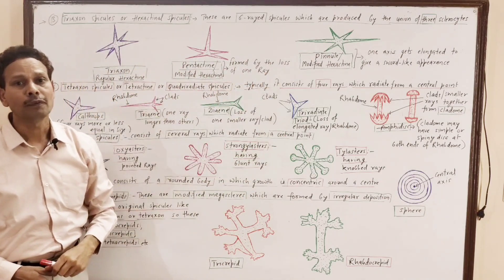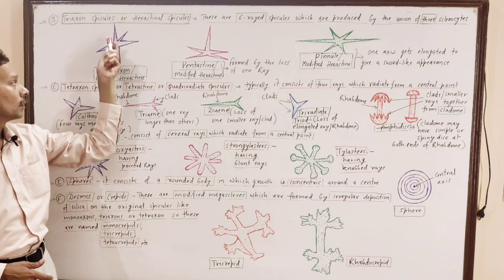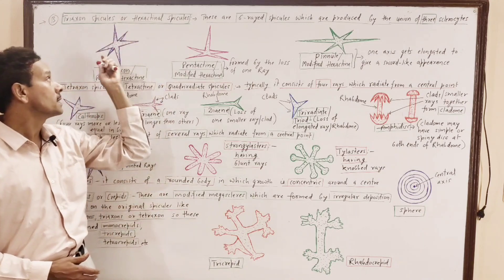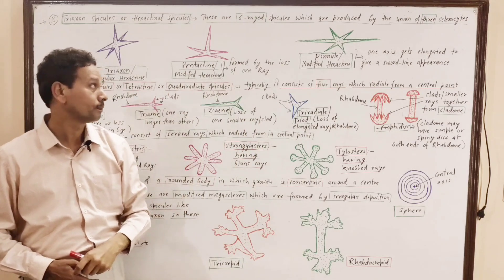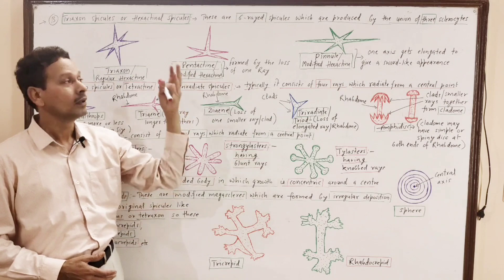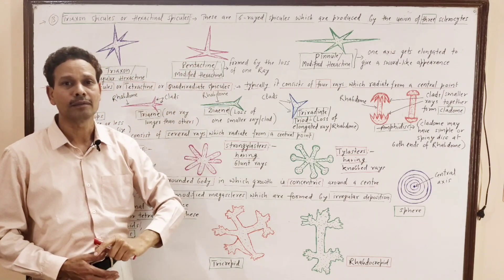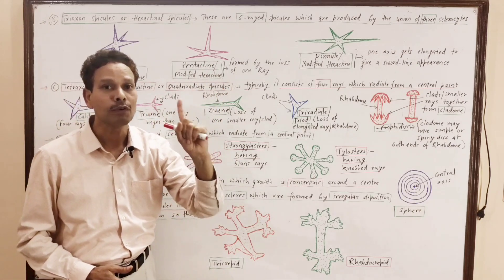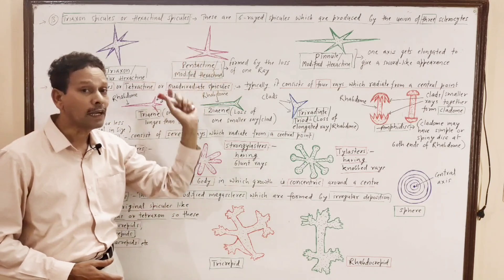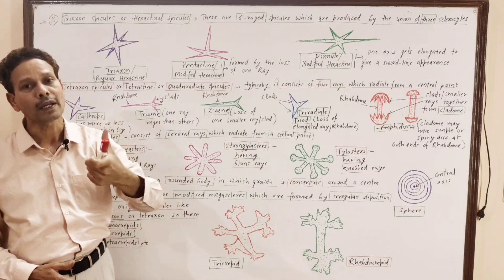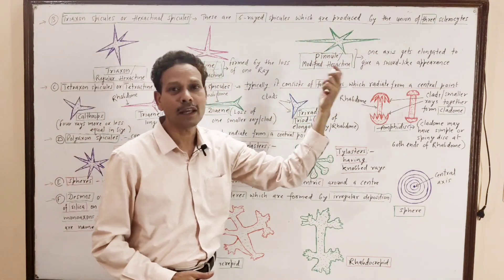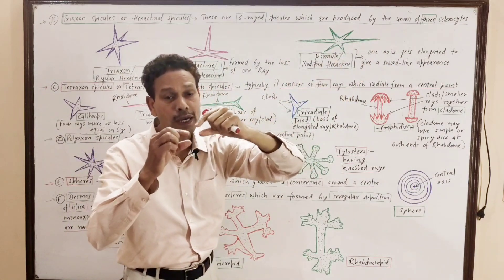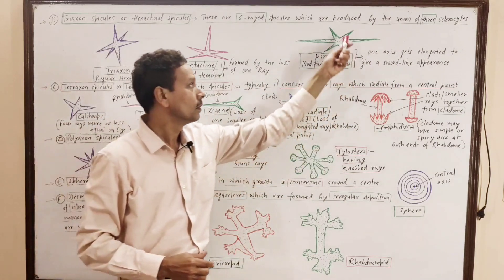There are some types of triaxones. The structure of a triaxone, i.e., regular hexactine — all the rays which develop from the central axis are almost equal in size. This is a modification of triaxone: it is penta-actine. Instead of hexactine, it is penta-actine, meaning five rays are present — one ray gets lost. Another modification of triaxone is the pinule, where one axis gets elongated like a shaft. It is named pinule.